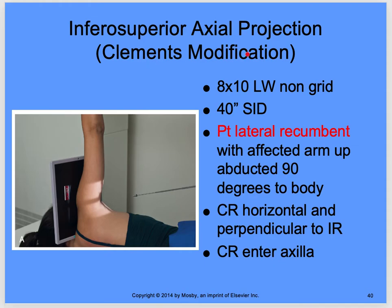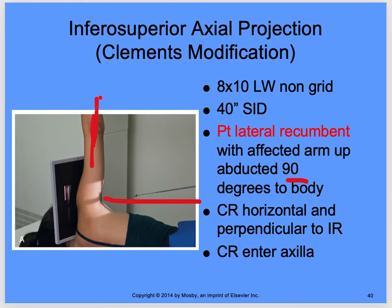For the inferior superior axillary projection, Clements modification, it's still an 8x10 but lengthwise instead of crosswise. SID is 40 inches. The patient is lateral recumbent with the affected arm at 90 degrees to the body. Your central ray is horizontal and perpendicular to the image receptor, entering the axilla. When the patient can achieve 90 degrees, come in perpendicular — disregard any angle shown in the diagram. Perpendicular to your IR.